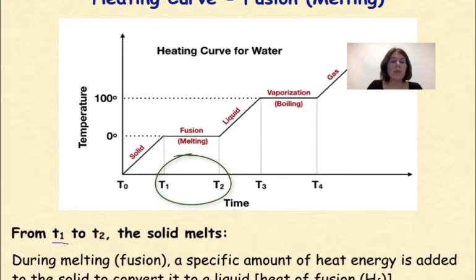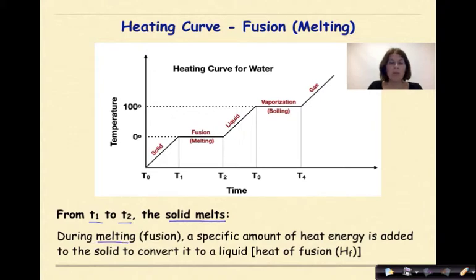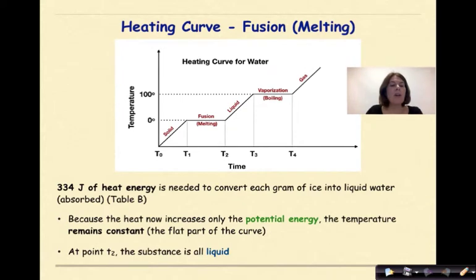From T1 to T2, the solid is going to melt over time. During melting, which we also refer to as fusion, a specific amount of heat energy is added to the solid to convert it into a liquid. This is known as the heat of fusion and is represented as capital H with a subscripted lowercase f. From T1 to T2, we're going to see both solid and liquid exist during this time.